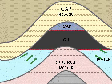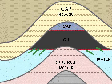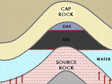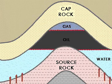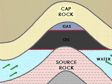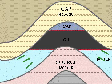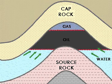The expelled oil keeps moving upward towards the surface till it comes across an impervious rock known as the cap rock. This cap rock stops the further upward migration of oil.